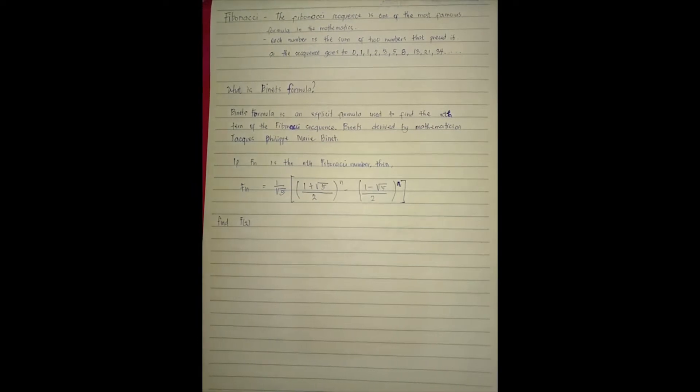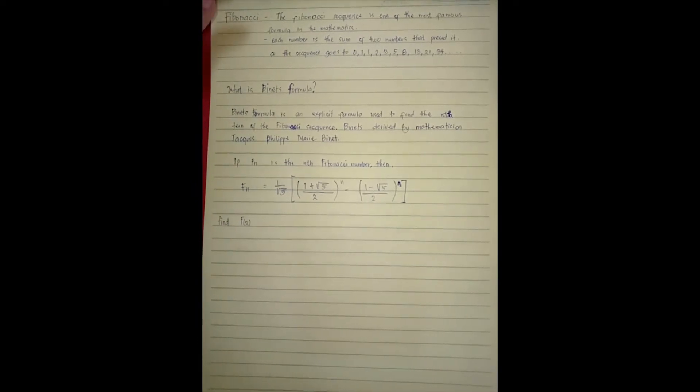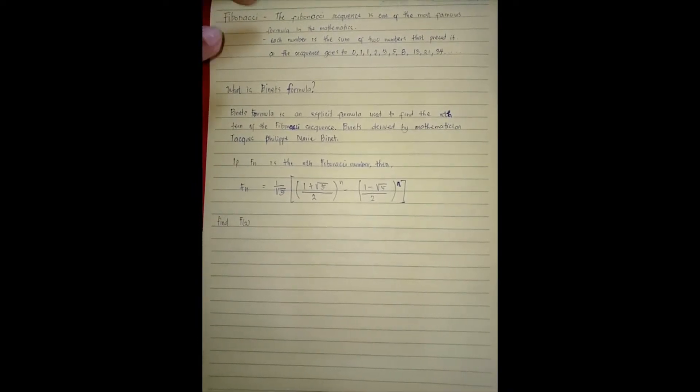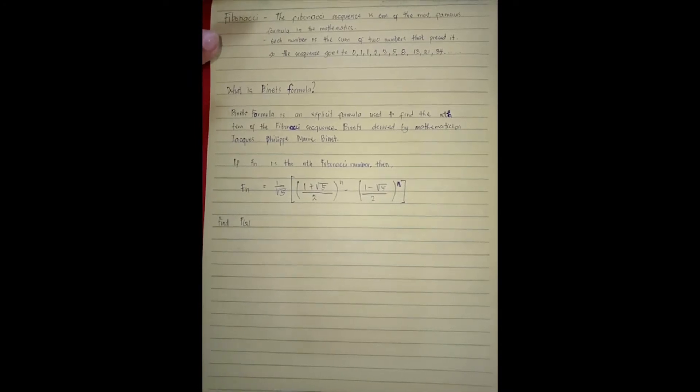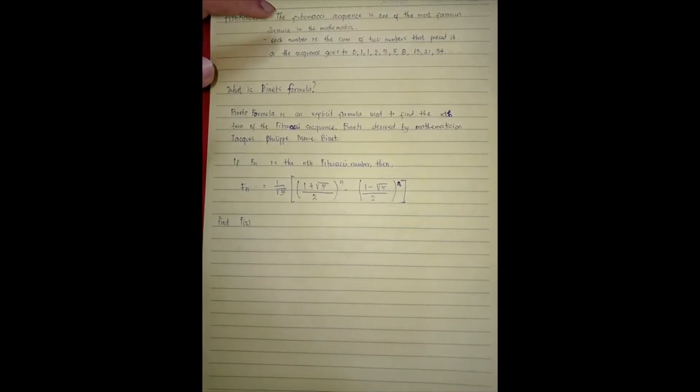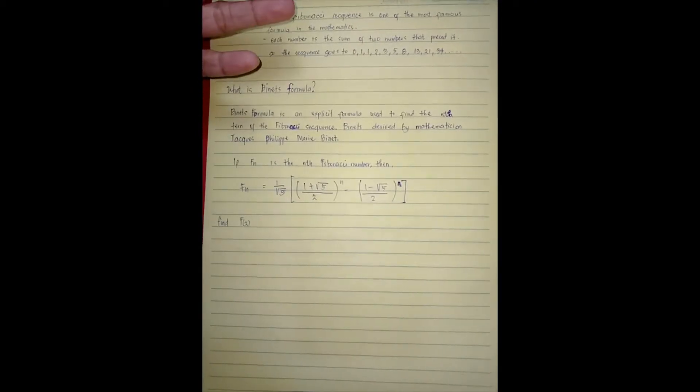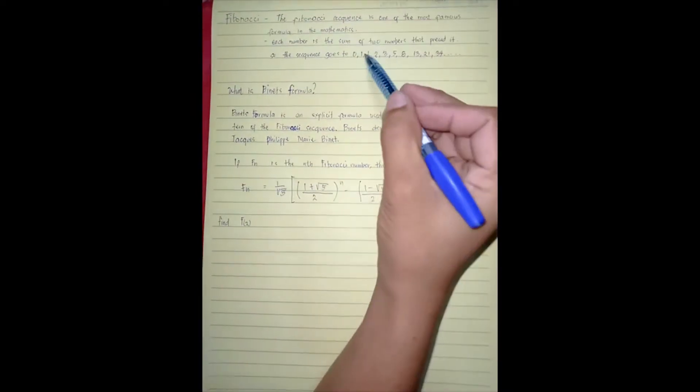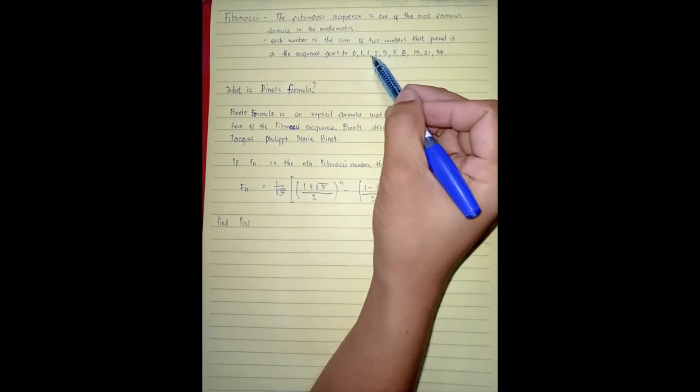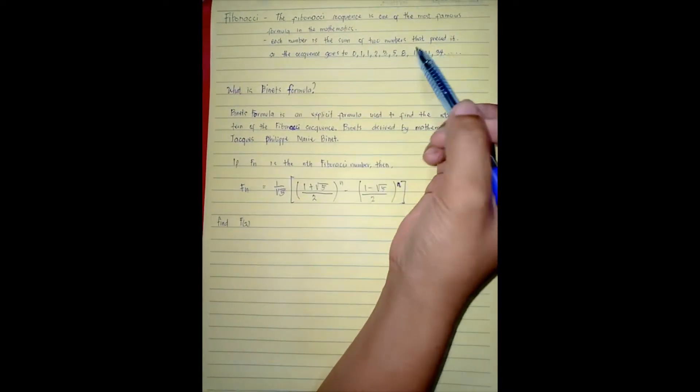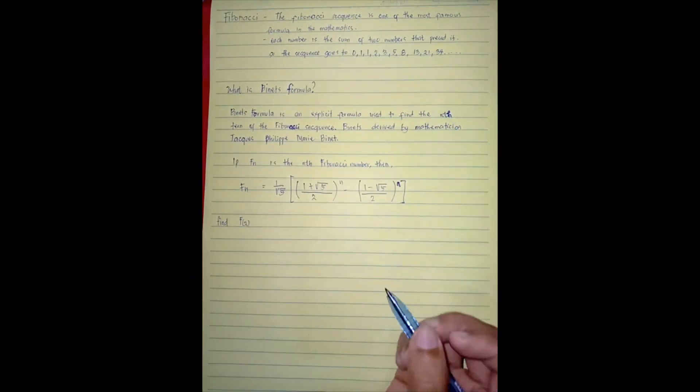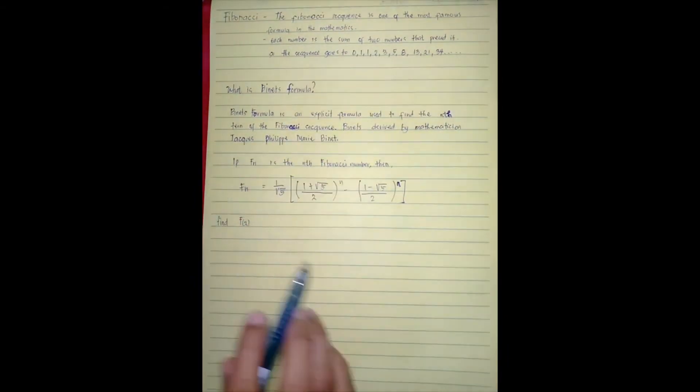Kailangan lang natin diba, sabi dun is ang number na susunod is the sum of two numbers. So kung yung nauna i-add yun at yun yung magiging, like this: one plus one is equal to two, tapos two plus one is equal to three, ganun lang yung hanggang sa makuha na yung pinaka ano kasi infinite naman yun.